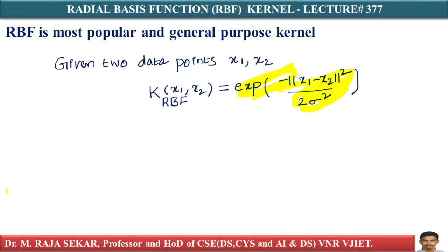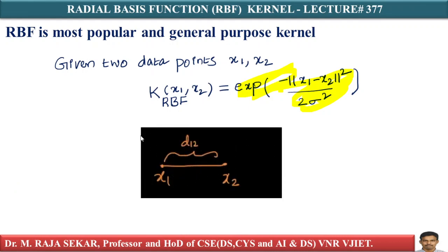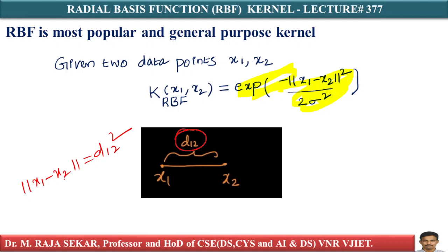If you take the numerator, the numerator is the norm of x1 minus x2, whole squared. Let x1 and x2 be two points. The distance between them is d12, so norm(x1 minus x2) squared equals d12 squared — that is, the square of the distance between points x1 and x2.